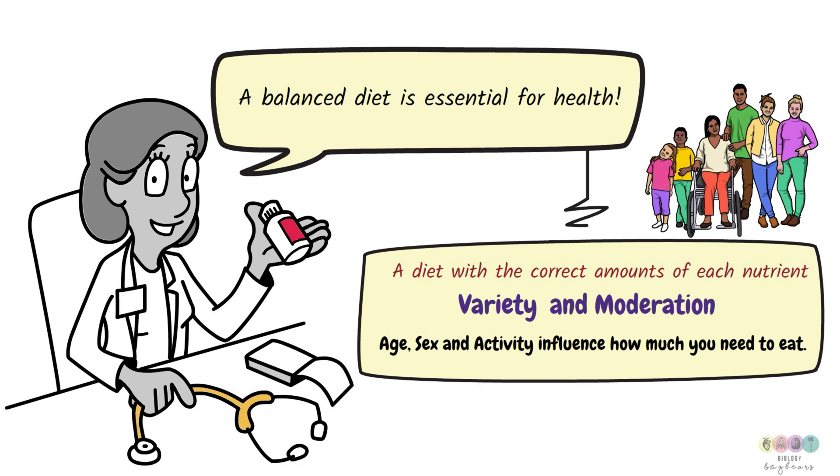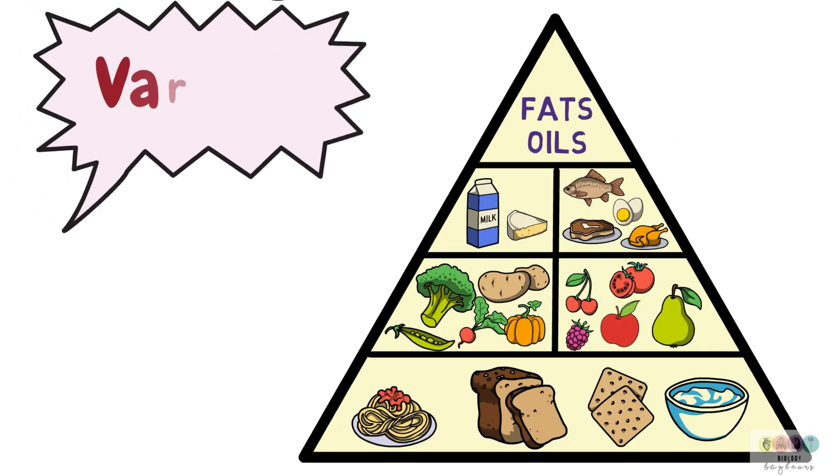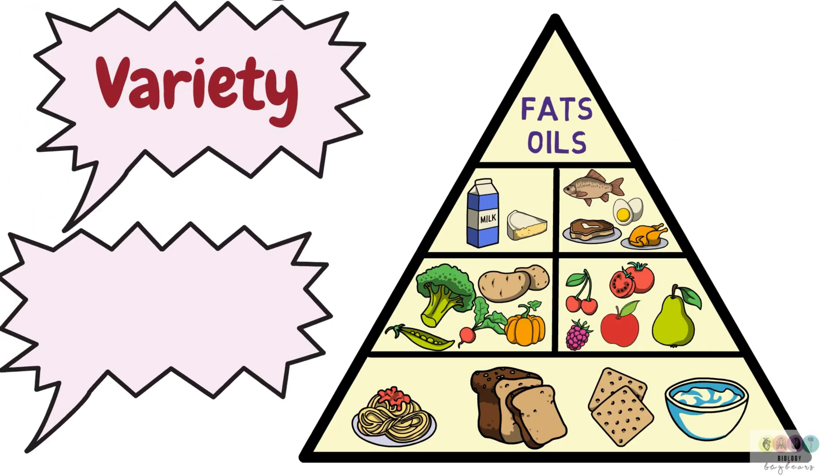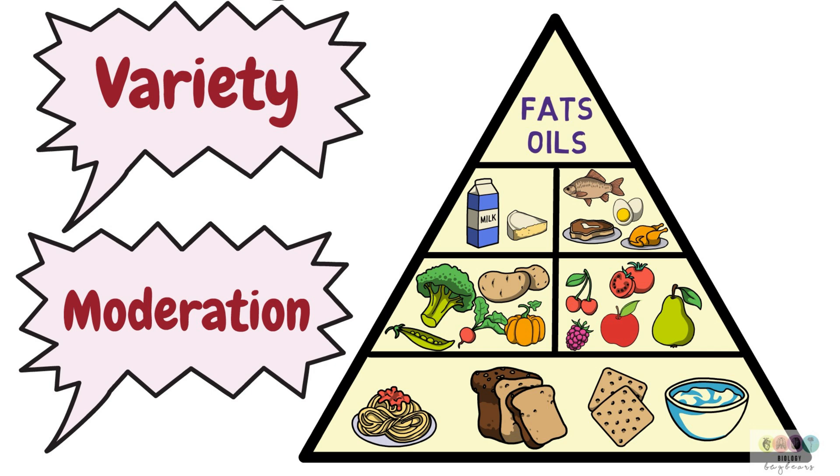So a balanced diet is the correct amounts of each of the nutrients. There is variety and you also employ moderation so you don't eat too many fats and oils. And you make reference to the food pyramid if you're given this in an exam question.